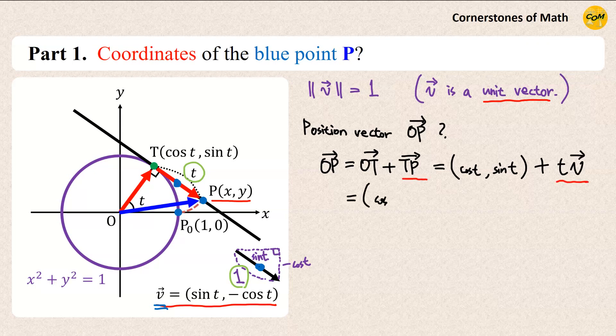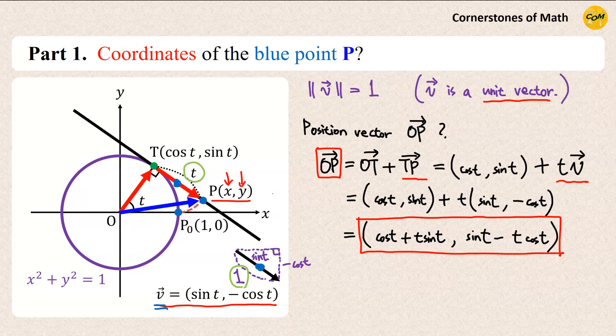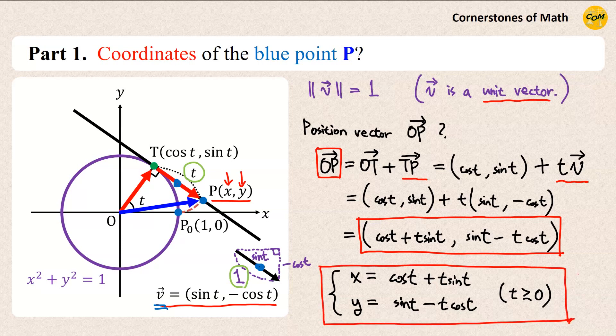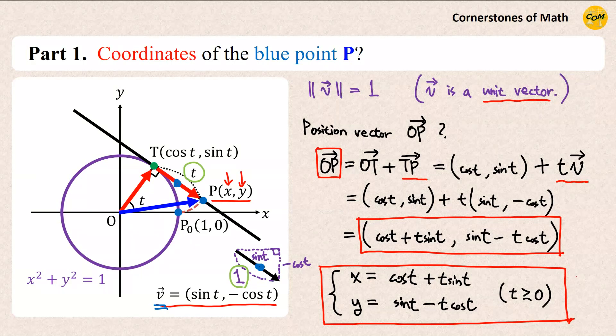So, we have cosine T, comma sine T, plus T times sine T, comma minus cosine T, which gives cosine T plus T sine T, comma sine T minus T cosine T. Or using X and Y, we have X equals cosine T plus T sine T, and Y equals sine T minus T cosine T. And, of course, T should be greater than or equal to zero. So, this is how we find the exact location of point P at any moment. Now, let's move on to the next part.